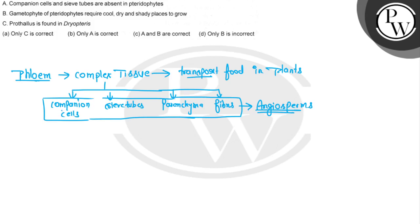Companion cells and sieve tubes are both absent in gymnosperms and pteridophytes. In pteridophytes, sieve cells conduct food, not sieve tubes.